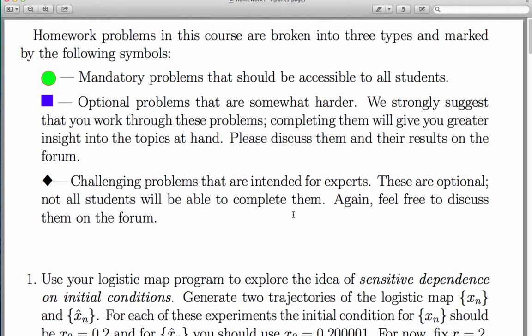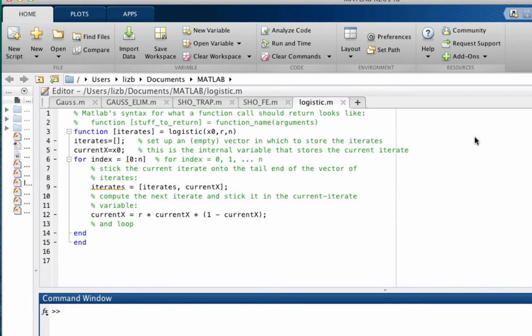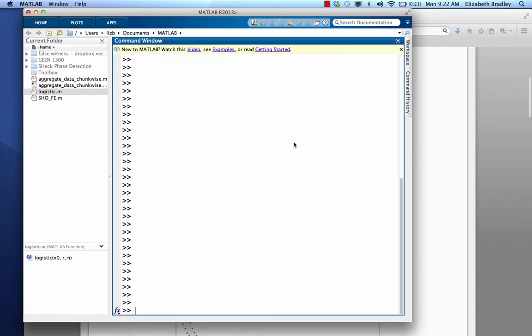The first problem here will call upon the logistic map program that you wrote earlier in this unit. The task in this problem was to generate a trajectory from x equals 0.2, 200 points long, with r equals 2. And then to generate a trajectory using the same r, the same number of points, but a slightly different initial condition.